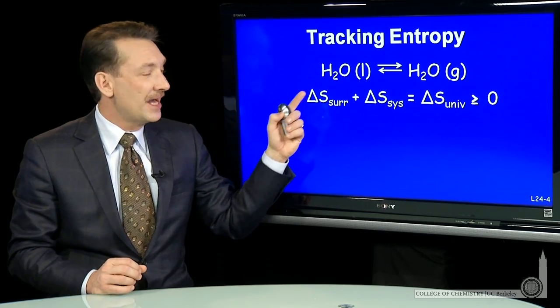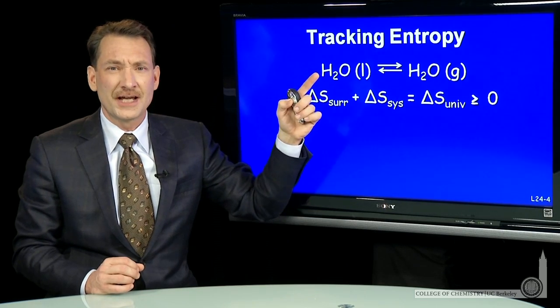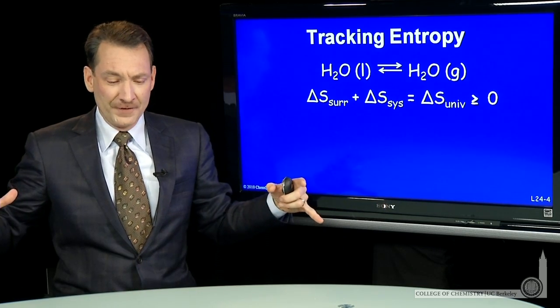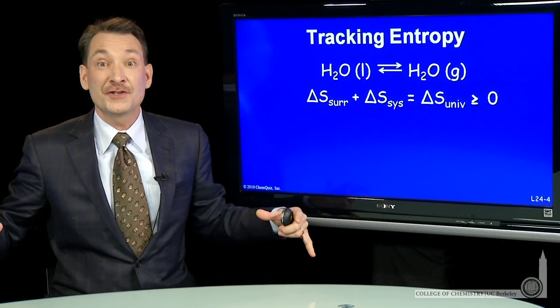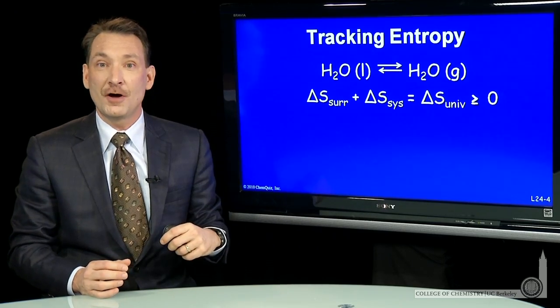Now, this entropy of the surroundings, what's happening in this reaction? Water liquid is changing into water gas. In order for that to happen, heat needs to flow from the surroundings into the system. How much heat? The enthalpy of vaporization of water.